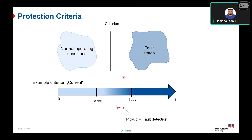The most traditional protection criteria is the RMS value of the current, but this can also be a voltage or a differential current. The important thing is to set the protection relay for the pickup value and the drop-off value. The pickup value is the start of fault detection, and the drop-off is the end of fault detection. The reset ratio — drop-off over pickup — should be greater than 95% based on the IEC standard.